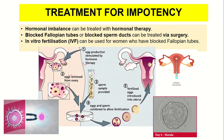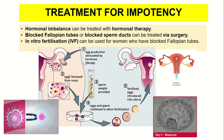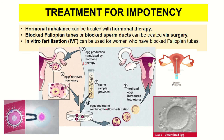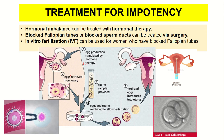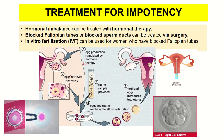In IVF, the secondary oocyte or eggs are retrieved from the ovary, and a sperm sample is provided. Fertilization occurs outside the woman's body, and after fertilization, the eggs are introduced into the uterus. This is one method to help married couples have children.